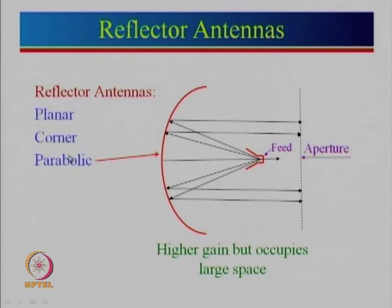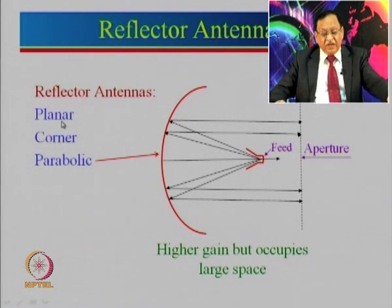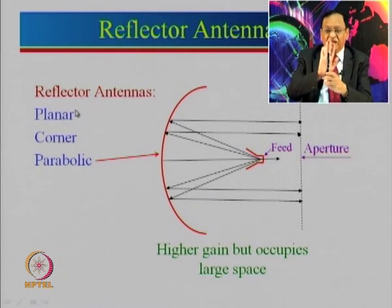Then we will talk about reflector antennas. There are three main categories. The first is a planar reflector — you have a dipole antenna and put a metallic plate behind it. The dipole radiates uniformly in all directions, but the wave incident on the plane reflects and goes forward. Basically the omnidirectional pattern becomes directional — it radiates only on one side and not the back.